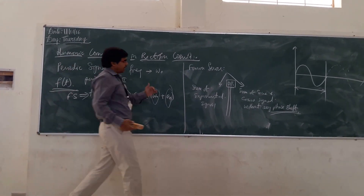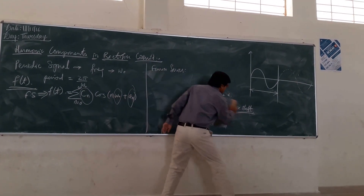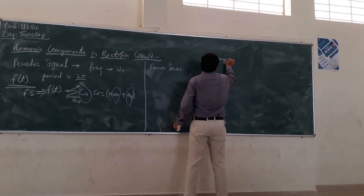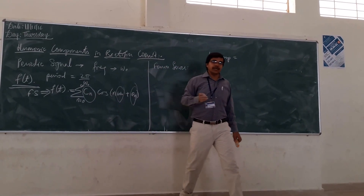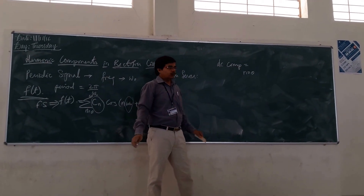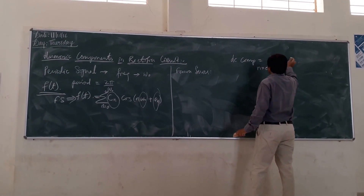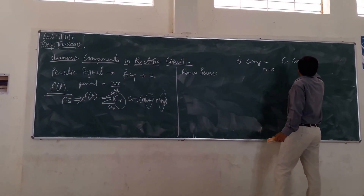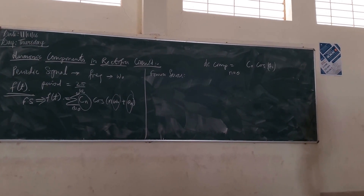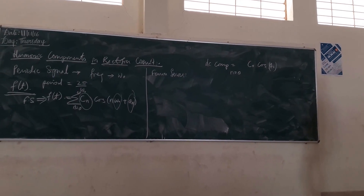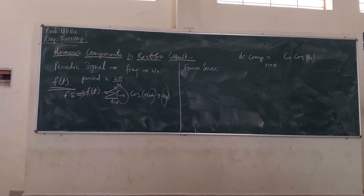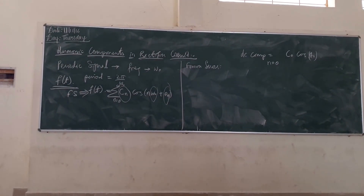If you are seeing this signal, let us calculate the DC component of the signal. What will be the DC component? You will have the DC component when we put N equal to zero. So just substitute N equal to zero wherever N is there, and you will get the DC component of that signal.